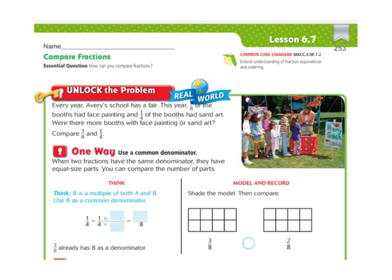We're going to start here with the Unlock the Problem. It says, every year, Avery's school has a fair. This year, three-eighths of the booths had face painting, and one-fourth of the booths had sand art. Were there more booths with face painting or sand art? So we want to see which one is greater, three-eighths or one-fourth.